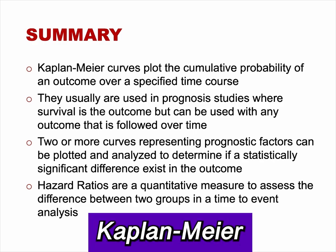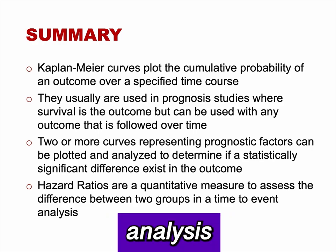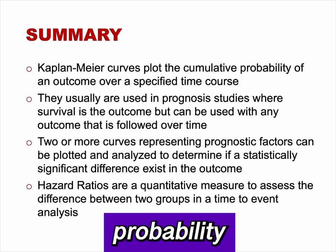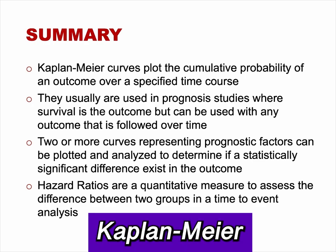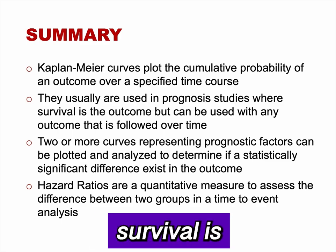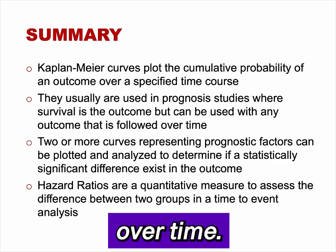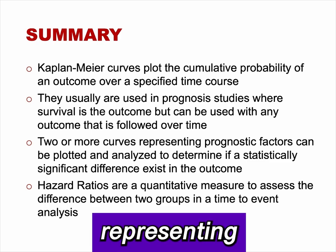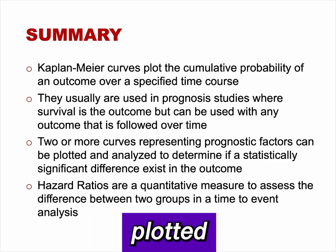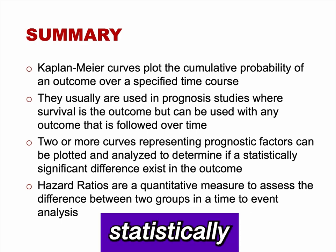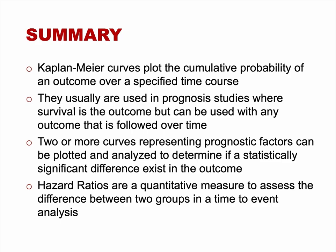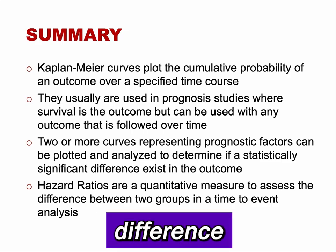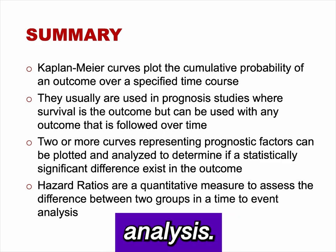In summary, Kaplan-Meier curves represent a time-to-event analysis that plots the cumulative probability of an outcome over a specified time interval. They are usually used in prognosis studies where survival is the outcome, but can be used with any outcome followed over time. Two or more curves representing prognostic factors or interventions can be plotted and analyzed to determine if a statistically significant difference exists. Hazard ratios are a quantitative measure to assess the difference between two groups in a time-to-event analysis.